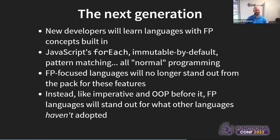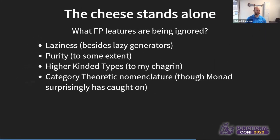Instead, like imperative and object-oriented programming before it, FP languages are now going to stand out not for the cool innovations that everyone adopted, but for what's left behind. I predict 10 years from now — maybe even less — people starting to write code for the first time are going to look back on languages like Haskell for the things that other languages haven't adopted. Laziness, for one. Haskell, even within the functional programming community, is somewhat unique in being a lazy language. Lazy generators like Python's generators or Rust's iterators are great, but the general concept of a lazy language is going to stand out.